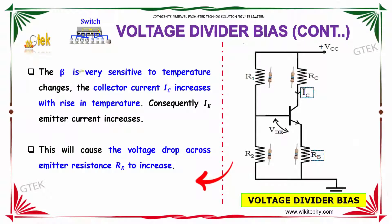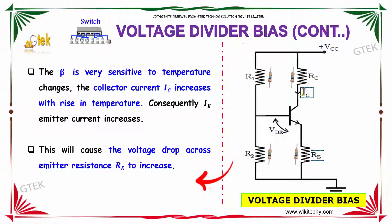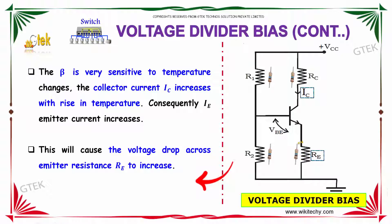Beta is very sensitive to temperature changes. The collector current IC increases with a rise in temperature. Consequently, the emitter current IE also increases, which causes the voltage drop across the emitter resistance RE to increase.